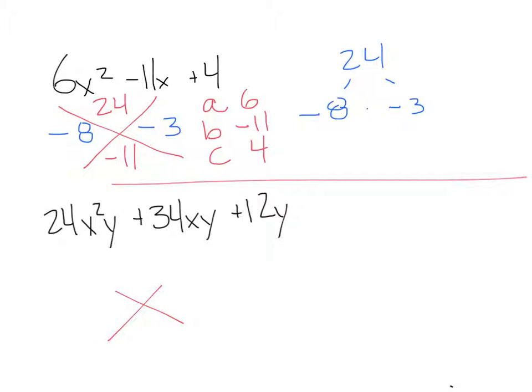24x squared y, 34xy, and 12y. Right off the bat you can see that there is a common factor, so we'll pull out a y as well as the number 2, which breaks this down into 12x squared plus 17x plus 6. So our new a is 12, our b is 17, and our c is 6.